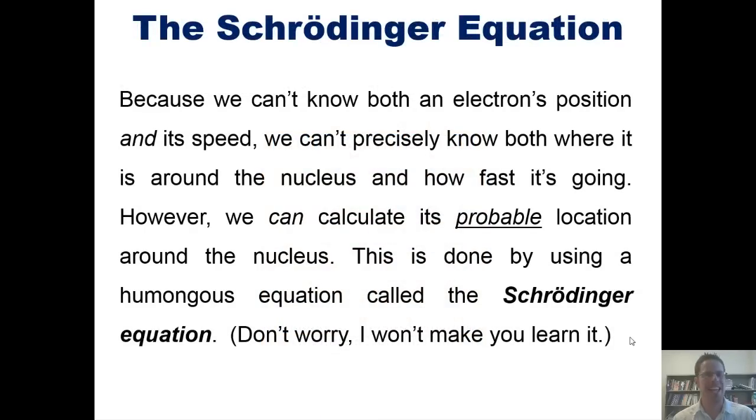So because we can't know with absolute accuracy both an electron's position and its velocity or speed, we can't precisely know where it is around the nucleus and how fast it's going. However, we can calculate its probable location around the nucleus. This is done using a humongous equation called the Schrödinger equation. Don't worry, I won't make you learn it.